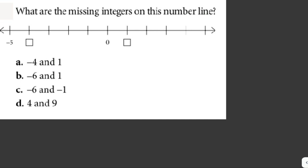What are the missing integers on this number line? So we're given here this number line, and the first box here is one greater than negative 5, and the second box is one greater than zero. Therefore, the numbers are just negative 4 and positive 1. So the answer here is letter A.